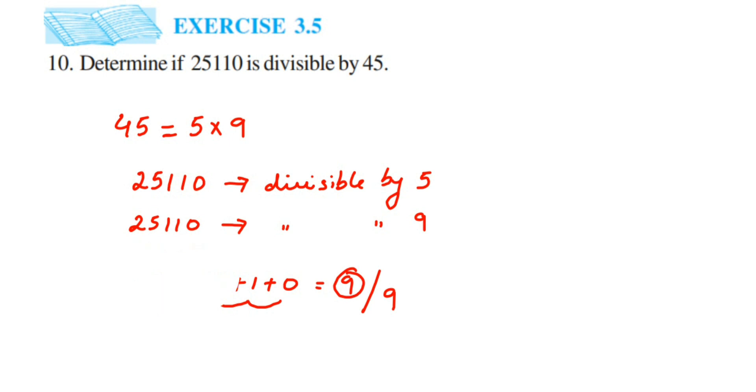So we have seen that 5 and 9 both can divide the given number. And also, 5 and 9 are co-prime. Co-prime means they have only one common factor, which is the number 1. If you find the factors of 5, it is 1 and 5. If you see the factors of 9, it's 1, 3, and 9.